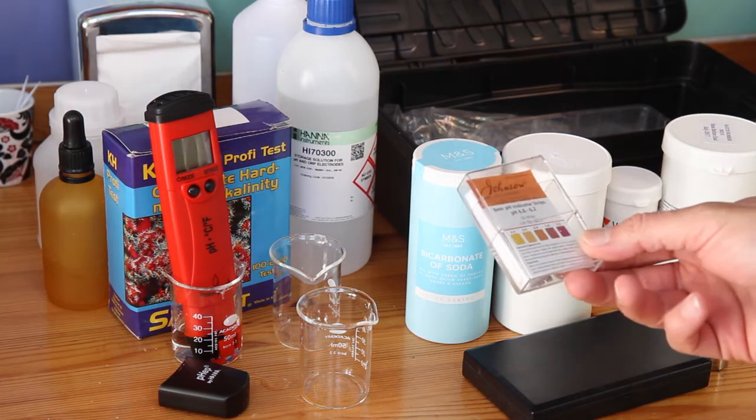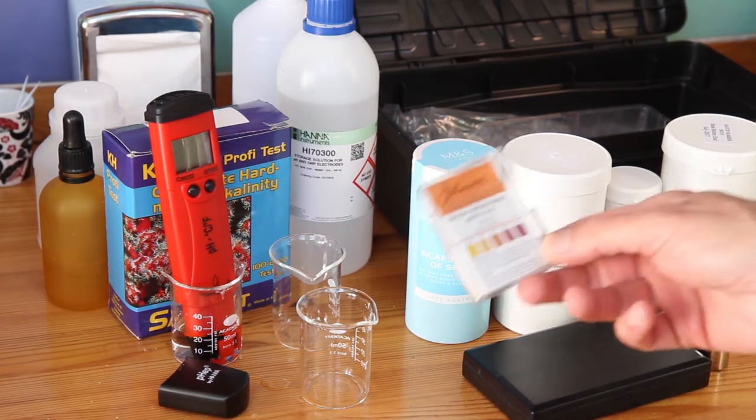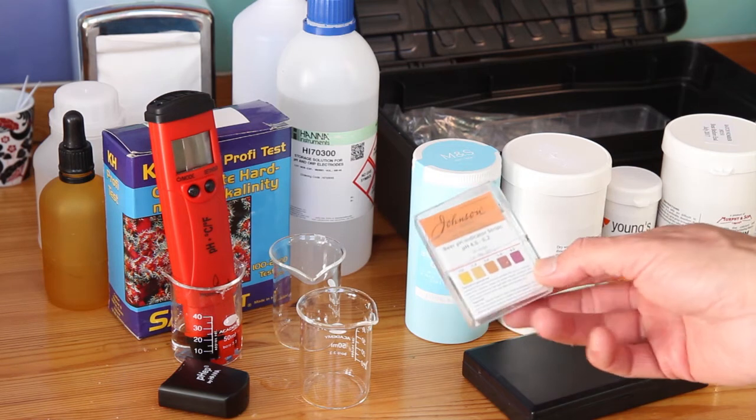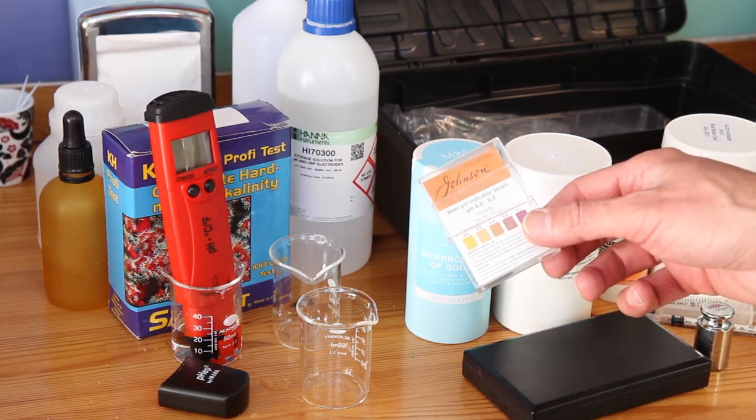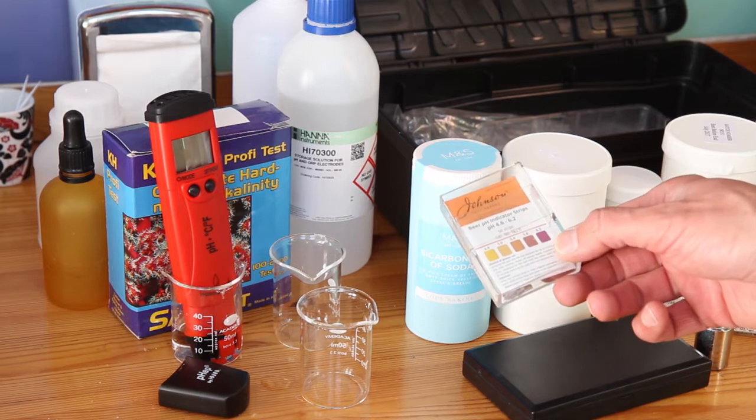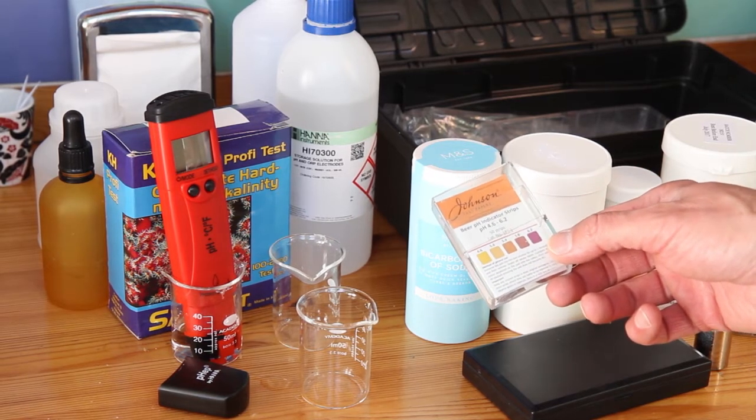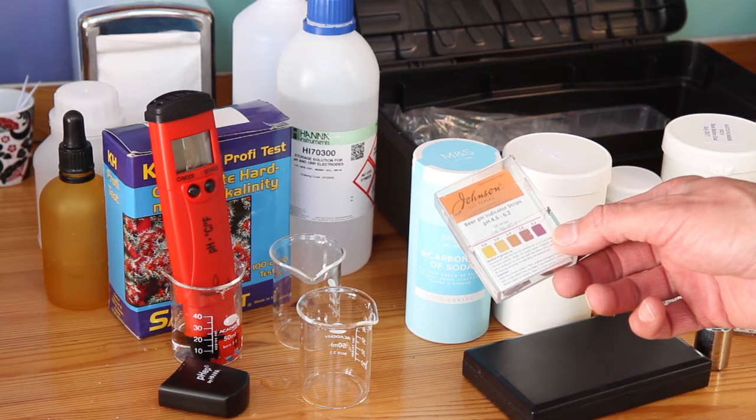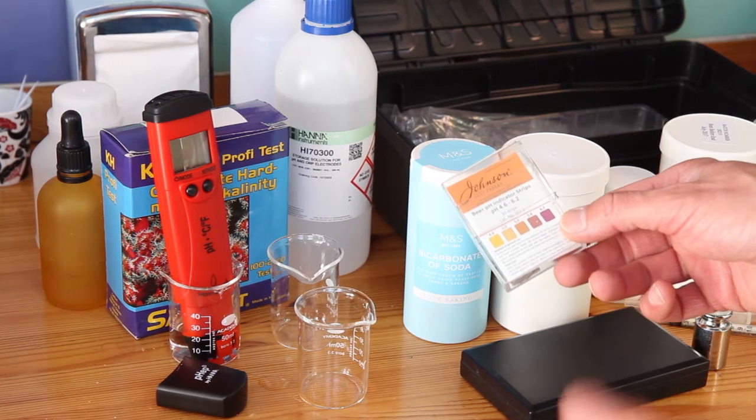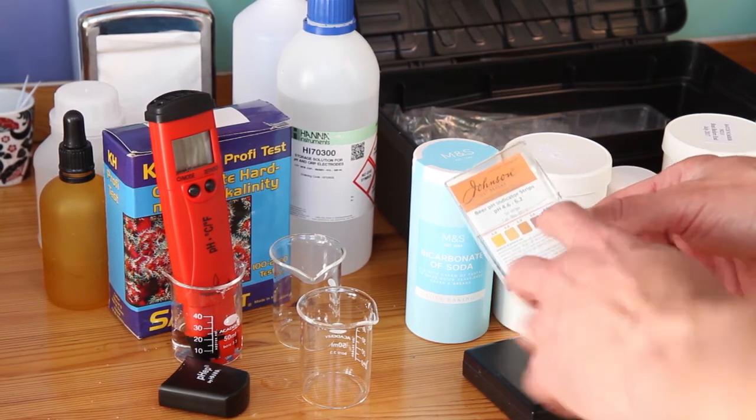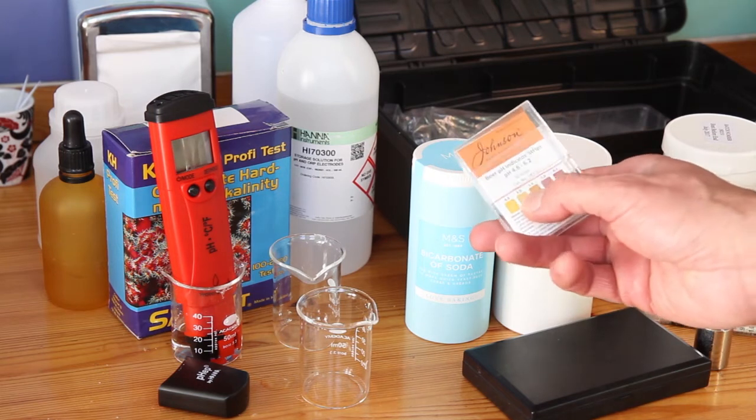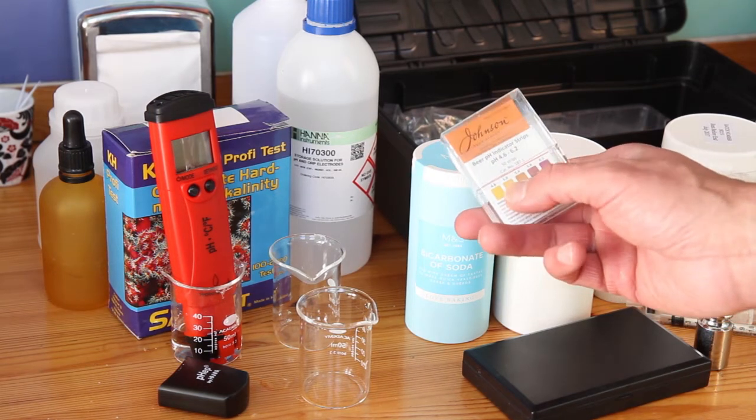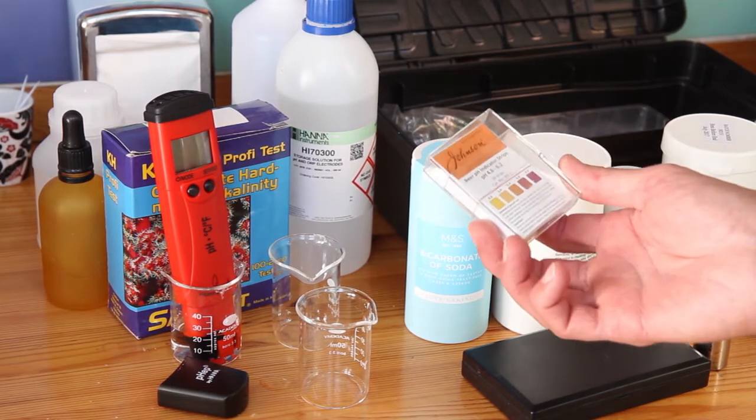One is to use test strips. If you are going to use test strips, get some like this that are in a restricted range. These just go 4.6 to 6.2, so they just cover the brewing range really. They go up in quite big steps though. It is 4.65, 5.4, 5.8. So you really want to be for most beers between 5 and 5.4. But they have served me quite well for quite a while.